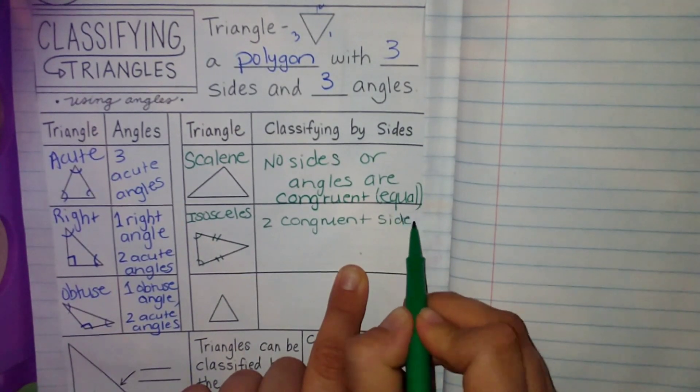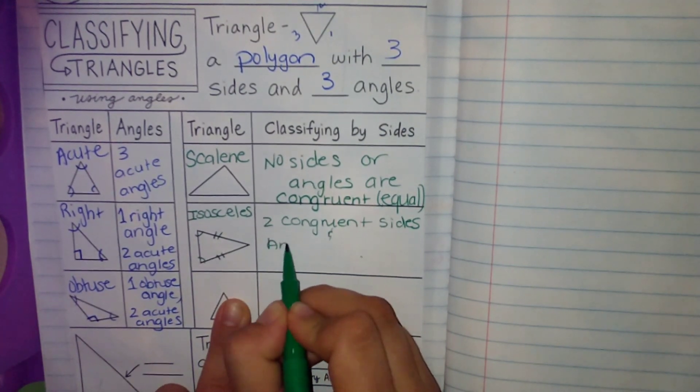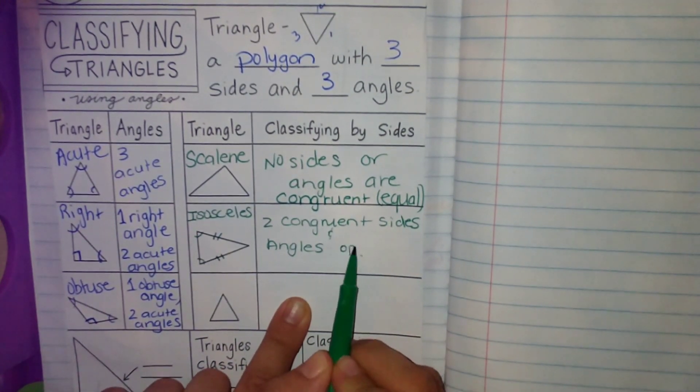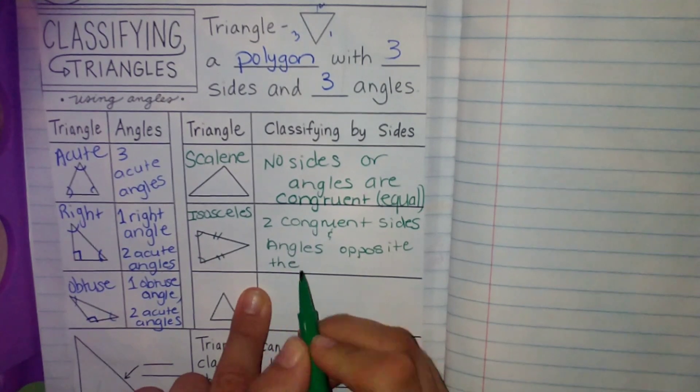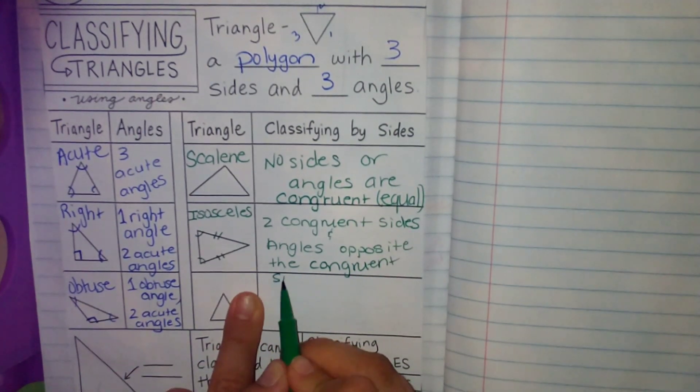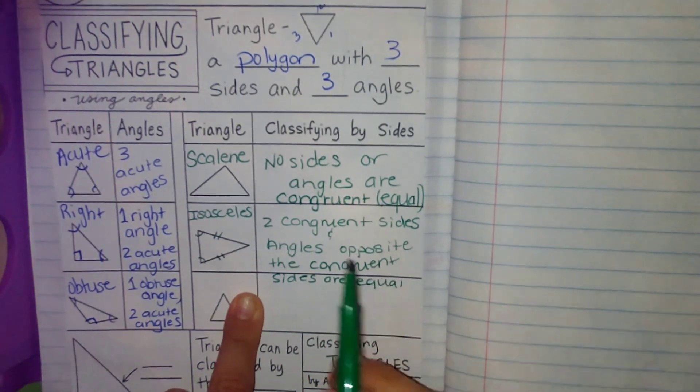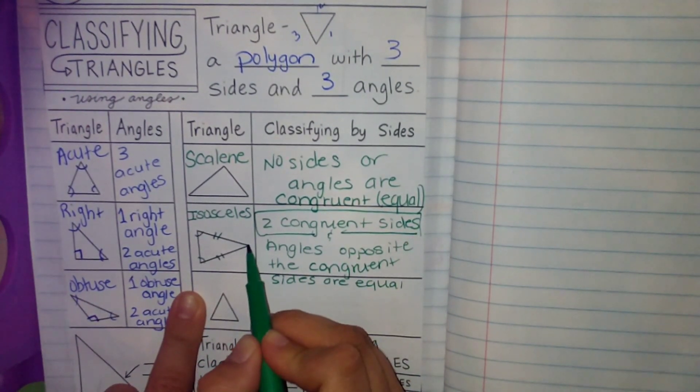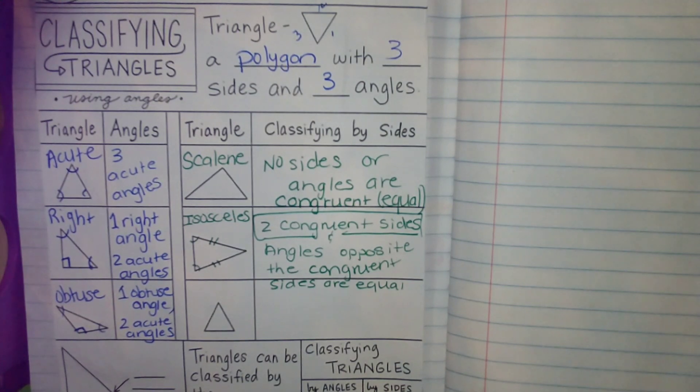Two congruent sides and the angles opposite the sides are equal. This is where they meet. The other two angles are actually going to be equal in size. Congruent in size.